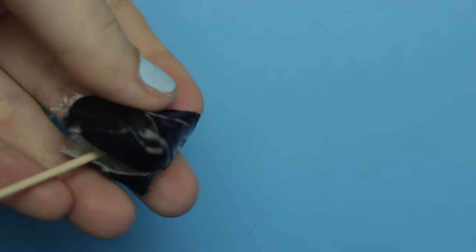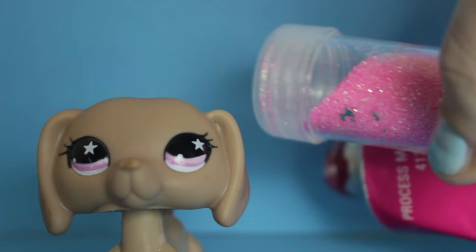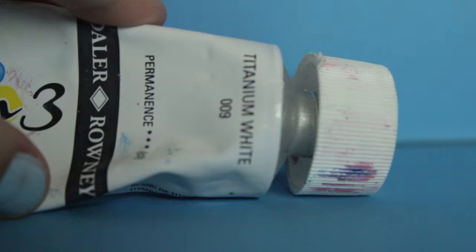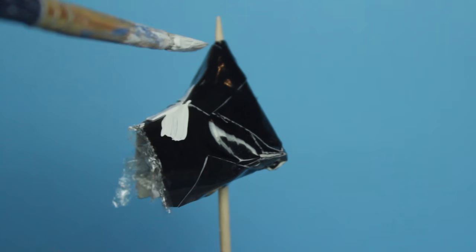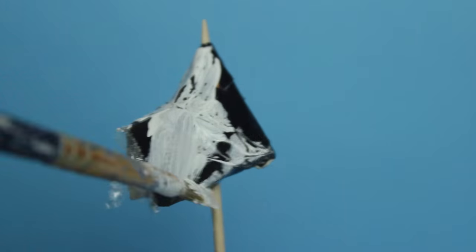Take a toothpick and push it through to the end of the tail. Choose your paint and glitter. Put the stick in the foam and then paint on white for a base coat. It doesn't need to be perfect.